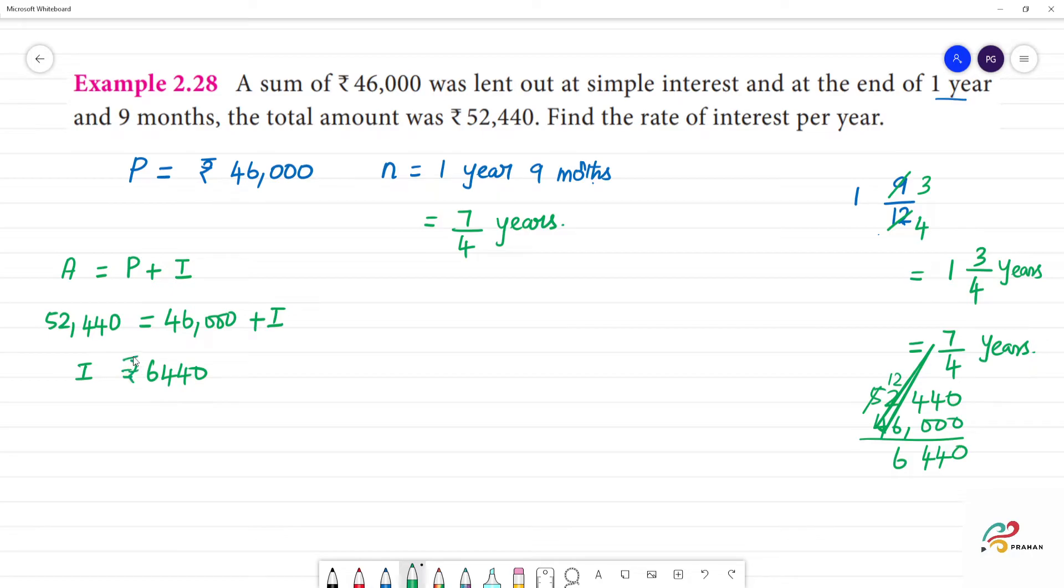We need to find the rate of interest, R. We know that I equals PNR by 100. Rearranging, R equals I times 100 by PN. So R equals 6,440 times 100 by 46,000 times 7/4.